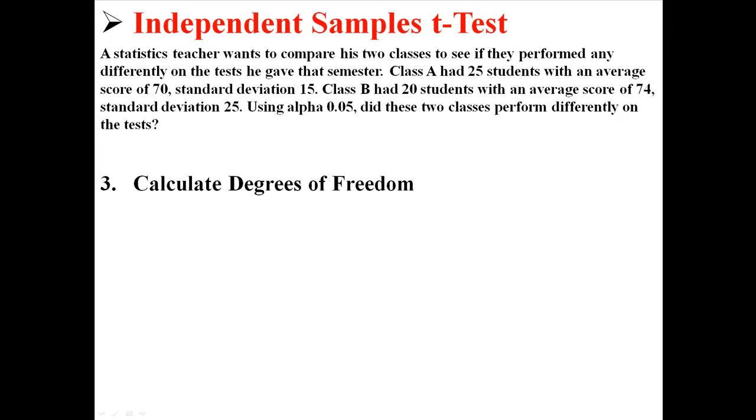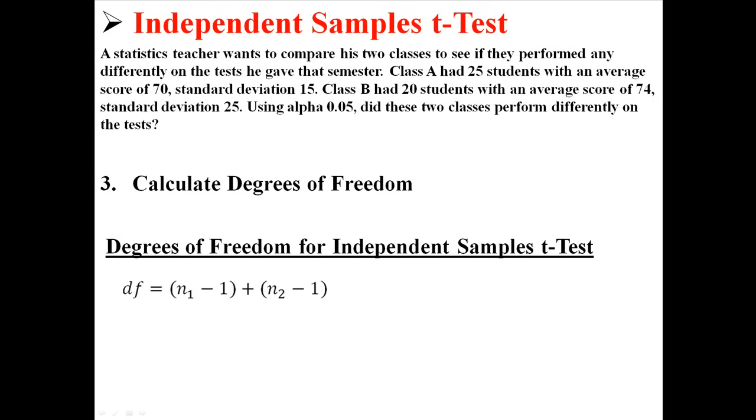Now we have to calculate the degrees of freedom. And this is how you calculate the degrees of freedom when you're doing an independent samples t-test. Degrees of freedom equal n1 minus 1 plus n2 minus 1. Basically it's each sample size minus 1, and then you add them together. So I do 25 minus 1 plus 20 minus 1, and I get degrees of freedom for this test of 43. We're going to use that when we find the critical value a little bit later.